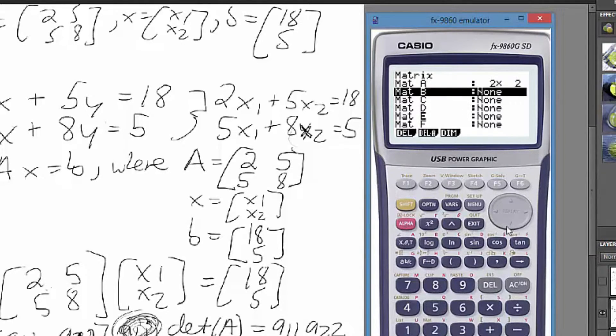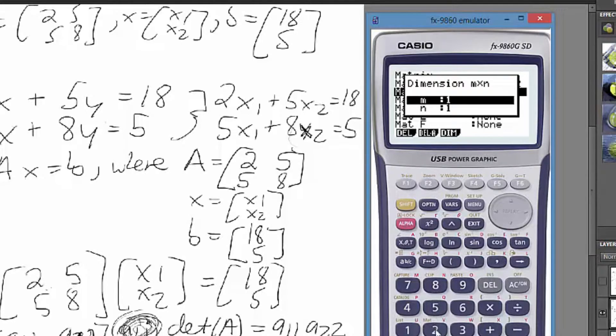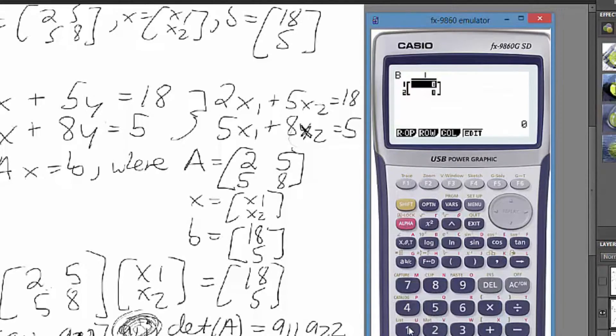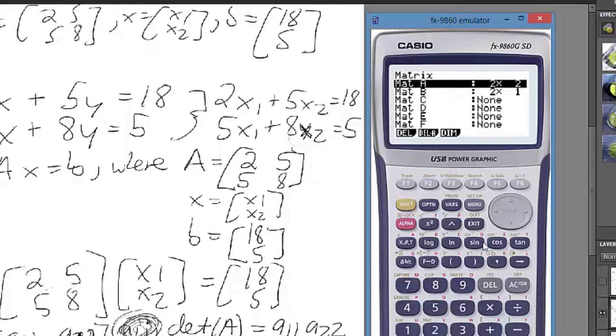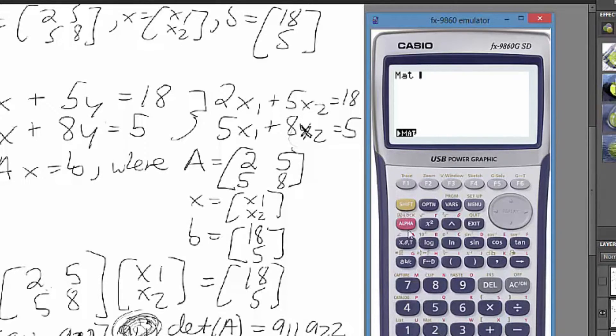And then we get matrix B, which will be 18 and 5. Let's do that. It'll be two by one, 18 and 5. And now those were A and B. Matrix A. Okay, there we go. We finally inverted it. Then we multiply it. And I'm sure on this calculator there's an easier way to do it, but for now, I'm going to play it safe.